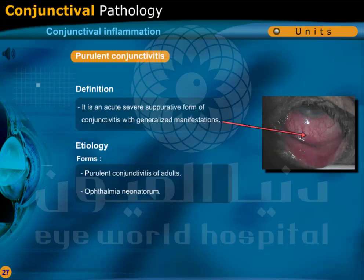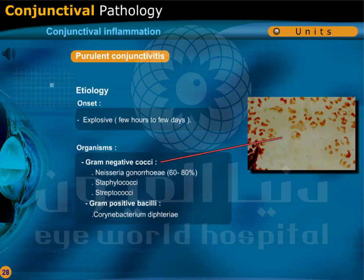Purulent conjunctivitis is an acute severe suppurative form of conjunctivitis with generalized manifestations. It could be purulent conjunctivitis of adults or ophthalmia neonatorum. It has an explosive onset, from a few hours to a few days. It is caused by gram-negative cocci such as Neisseria gonorrhoeae in 60-80% of cases, and also Staphylococci and Streptococci.